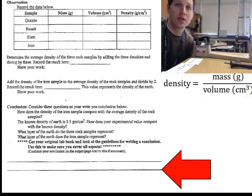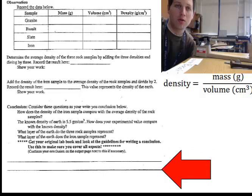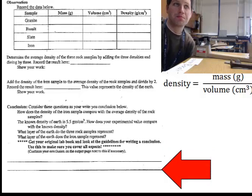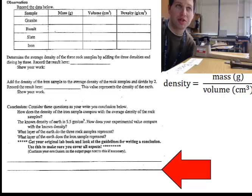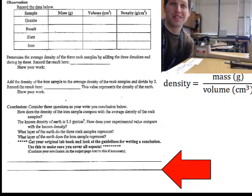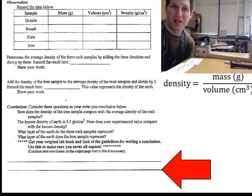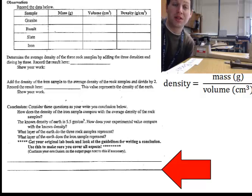Also, after you're done with the lab, you should return to your desk and your assigned seat and begin to write the conclusion for the lab, where you're talking about: what did you learn, what layer of earth do the three rocks represent, what is the density of the earth, which layers of the earth do you think are most dense, and why.